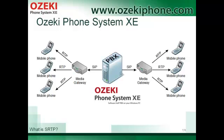Azeki Phone System XC can operate a lot of client types, including mobile phones. Unlike wired IP phones, mobile phones can provide more flexibility in corporate communication. In this case, mobile devices will be connected to a mobile service provider and to Azeki Phone System XC as well. Mobile phones will be connected to the SIP server with the SIP protocol, and the voice conversation will be carried by RTP and Secure RTP protocols.